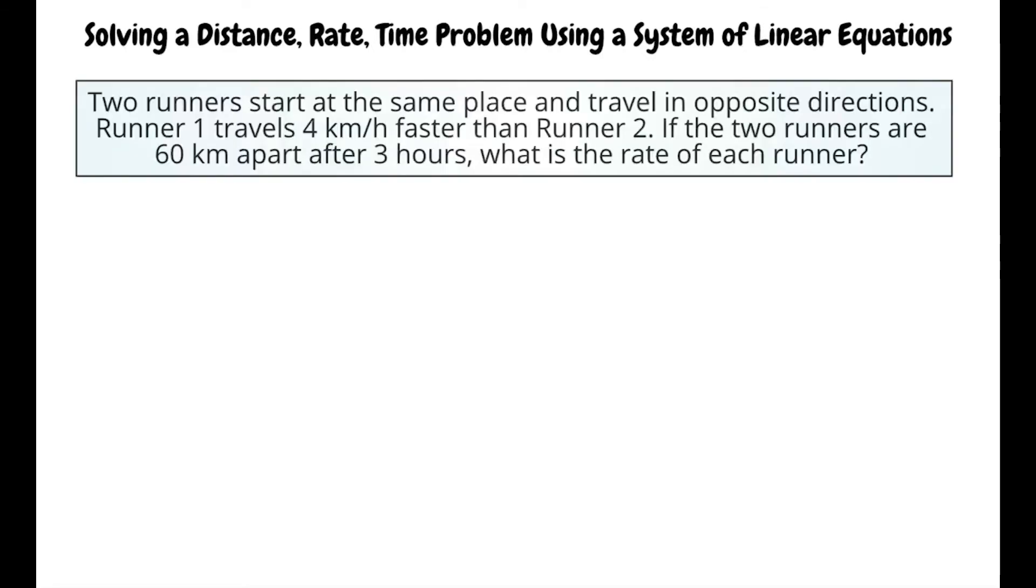Let's do an example. Two runners start at the same place and travel in opposite directions. Runner 1 travels 4 km per hour faster than runner 2. If the two runners are 60 km apart after 3 hours, what is the rate of each runner?